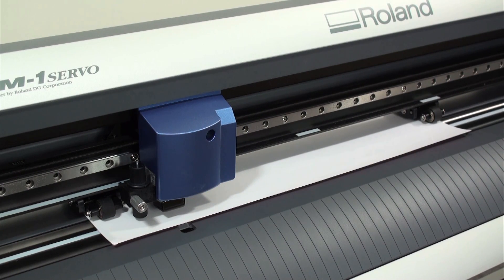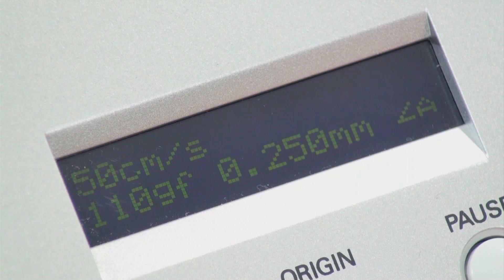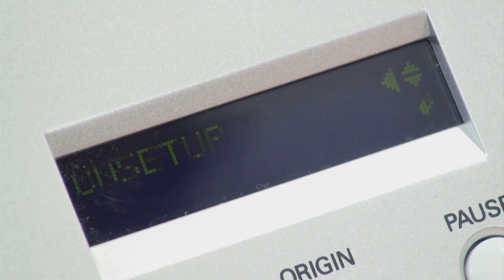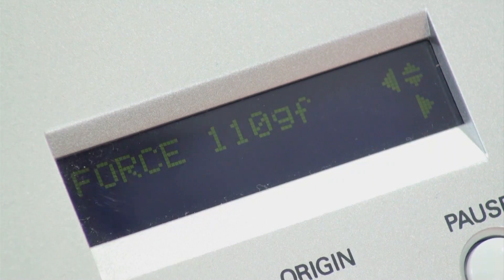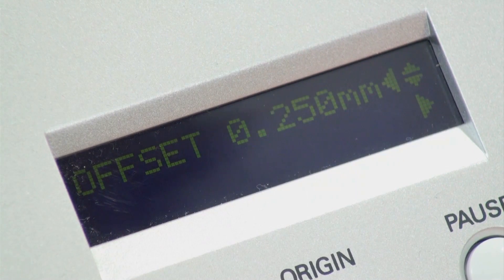That's a name cut with the accurate offset. Now I'll adjust the offset. Consult with your cutter manual for exactly how to adjust the offset on your machine. It should be pretty easy to access.